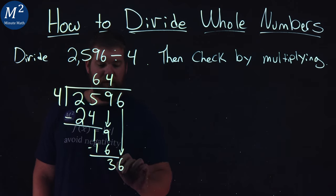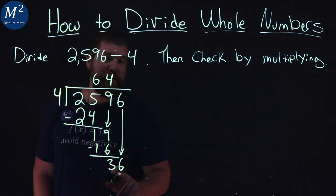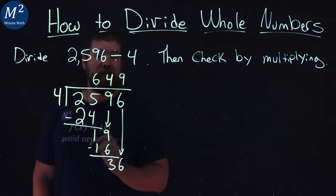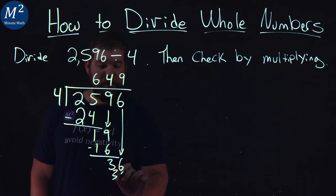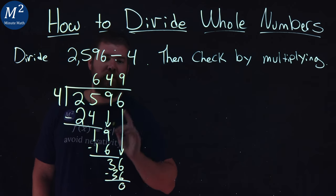Bring down the 6. Does 4 go into 36? Yes, 9 times exactly. 9 times 4 is 36. Subtract the two, we get 0. We're done.